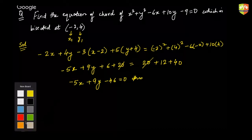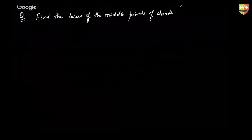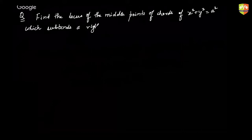That was an easy question. Let's move on to the next concept — a locus question. Find the locus of the midpoints of chords of the circle x² + y² = a² which subtend a right angle at the point (c, 0).